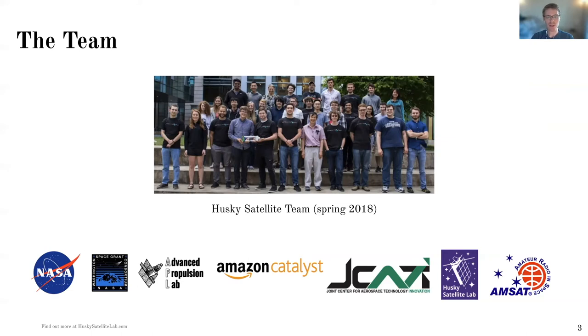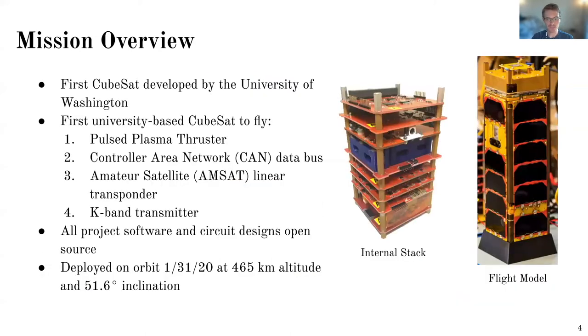So there's the Husky Satellite team. The project itself had a lot of people, a lot of undergraduates in particular, that helped make it possible. So shown there is just a picture from 2018, and then shown at the bottom here are a number of organizations that have supported our work. So I'd like to just give a quick overview of what the Husky Sat is. So it's the first CubeSat developed by the University of Washington.